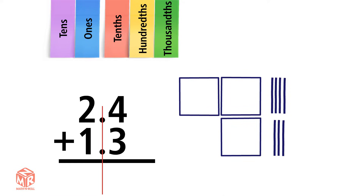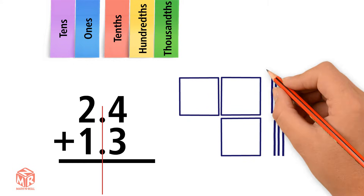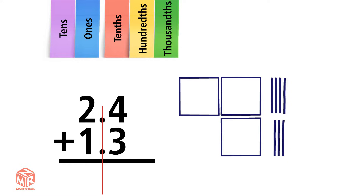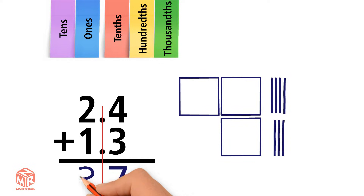We always add from right to left, so we start adding the tenths. 4 plus 3 is 7. 7 is less than 10, so we don't have to regroup. We put 7 in the tenths place, and then we put our decimal point. Now we add the ones. 2 plus 1 equals 3. So 2.4 plus 1.3 equals 3.7.